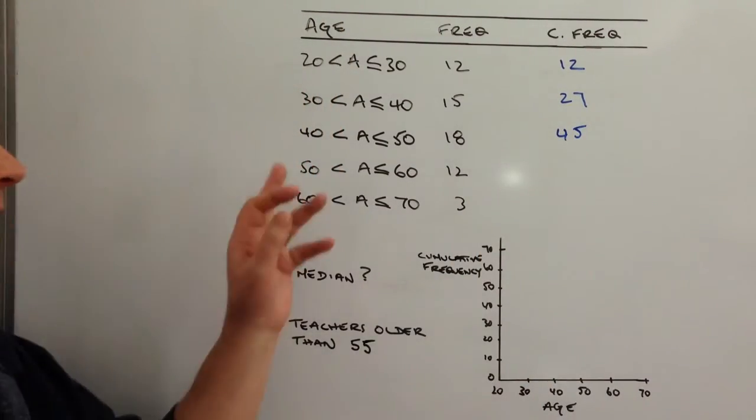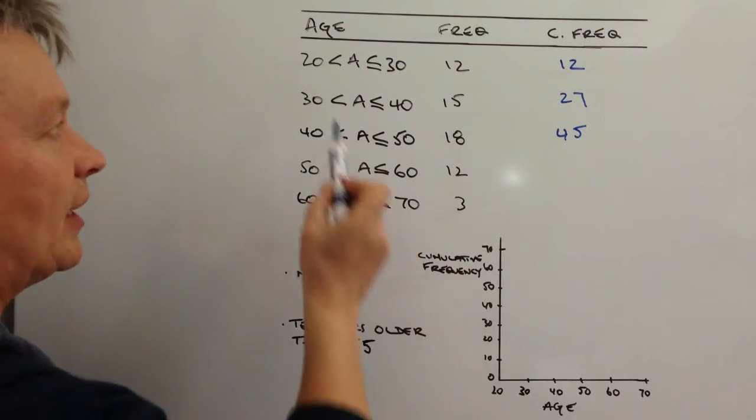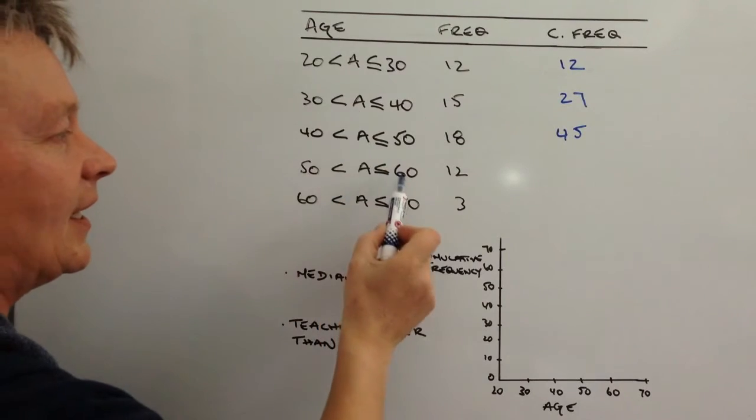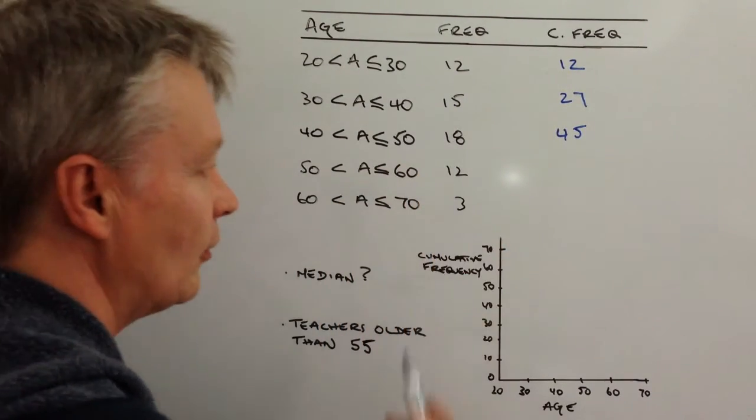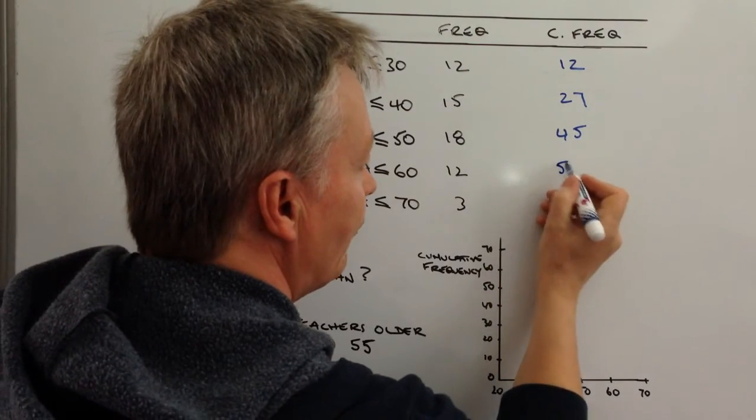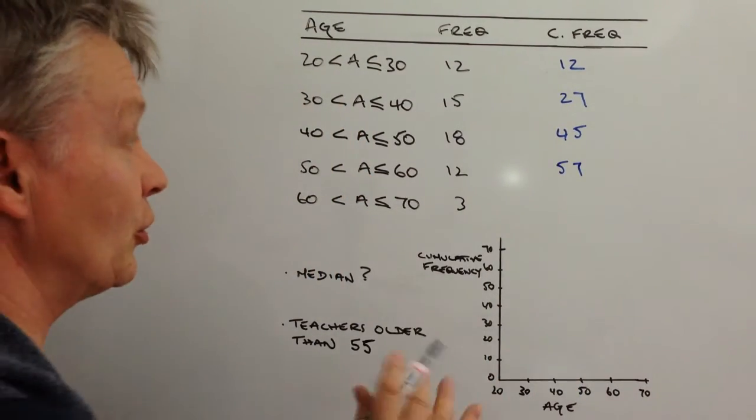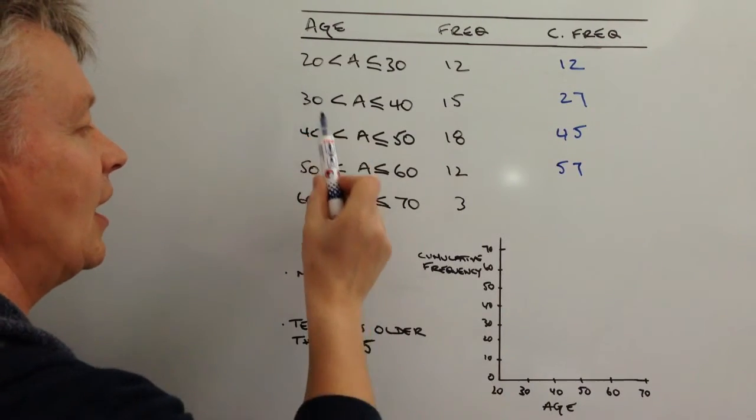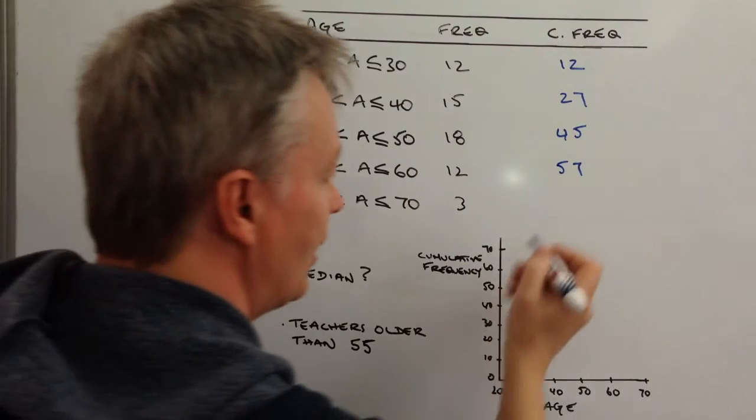The next group, 50 to 60, there's 12, so really the accumulation is between 20 and 60, so it's all of this totaled up together. If we total all of these up together, we get 57. And then the final group of accumulation, or cumulative frequency, is the 20 to 70 group, which is an additional three, which is going to be 60 altogether.